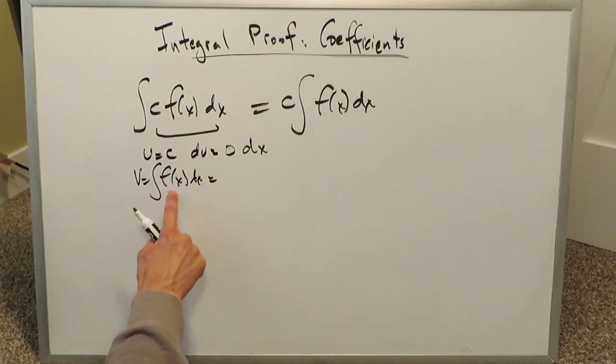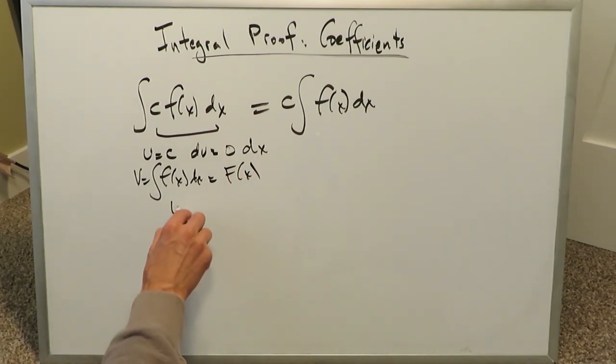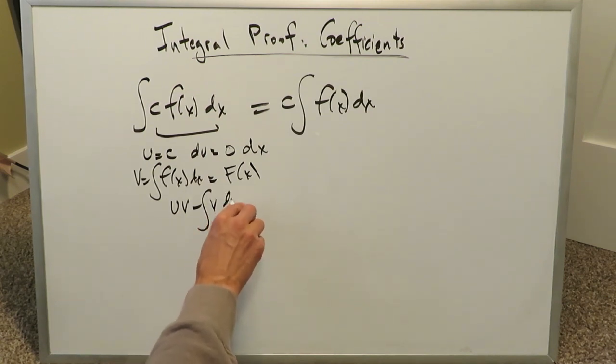And you know, if you want to depict this in terms of terminology, the anti-derivative of that, well, you can write it as that. Now we put everything in this integrating by parts formula, uv minus integral v du.